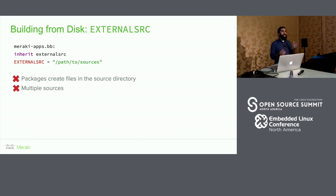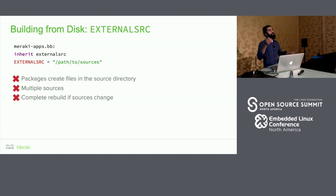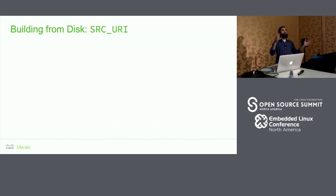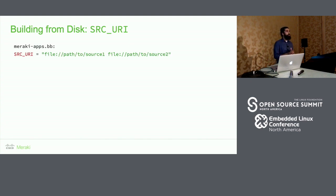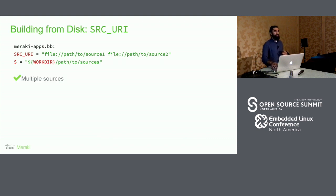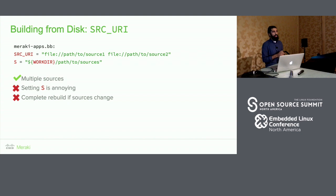External source also cannot handle multiple sources, which we needed for a few packages. And if anything changes — say a C file — it will reconfigure and recompile everything. To address the multiple-source problem, we tried using SRC_URI directly. The file-type SRC_URI lets you specify a path on local disk and copies things over, but it doesn't update S to point to the new path, so you have to set S manually. It also doesn't address the problem of unnecessary rebuilds when sources change.